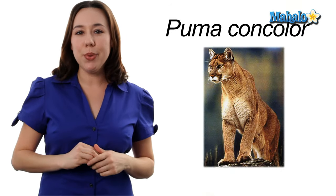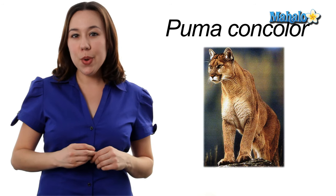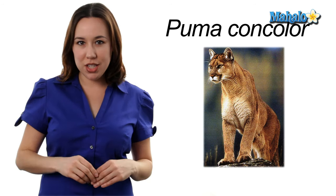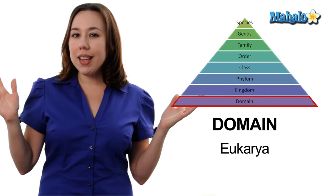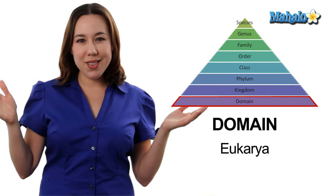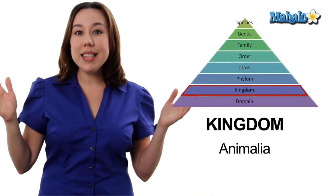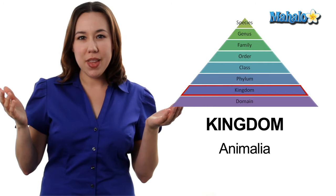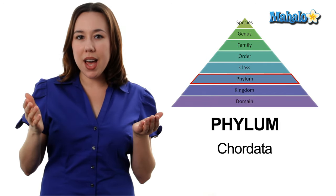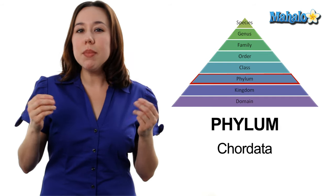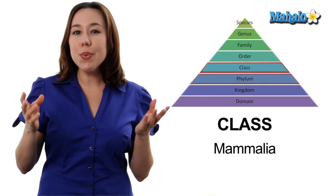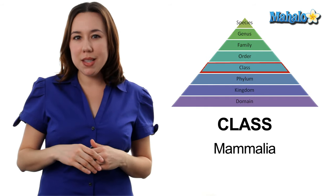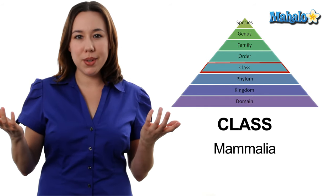Let's take an example: our mountain lion. We're going to take our mountain lion and classify it all the way from domain to species. Our mountain lion is going to be in domain Eukarya, or the eukaryotes. It's then going to be in kingdom Animalia, or the animal kingdom. Then we have phylum Chordata, or the chordates — these are going to be organisms that have a backbone. Then we're going to have class Mammalia. These are mammals; mammals are organisms that have fur and produce milk.